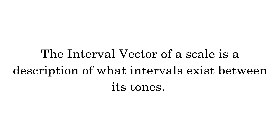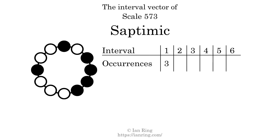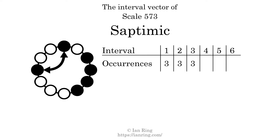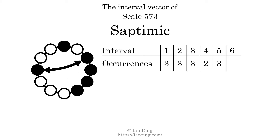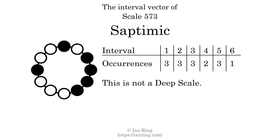The interval vector of a scale is a description of what intervals exist between its tones. There are 3 intervals with the size of 1 semitone. There are 3 intervals with the size of 2 semitones. There are 3 intervals with the size of 3 semitones. There are 2 intervals with the size of 4 semitones. There are 3 intervals with the size of 5 semitones. There is one interval with a size of six semitones. Each interval does not appear in this scale a unique number of times, so this is not a deep scale.